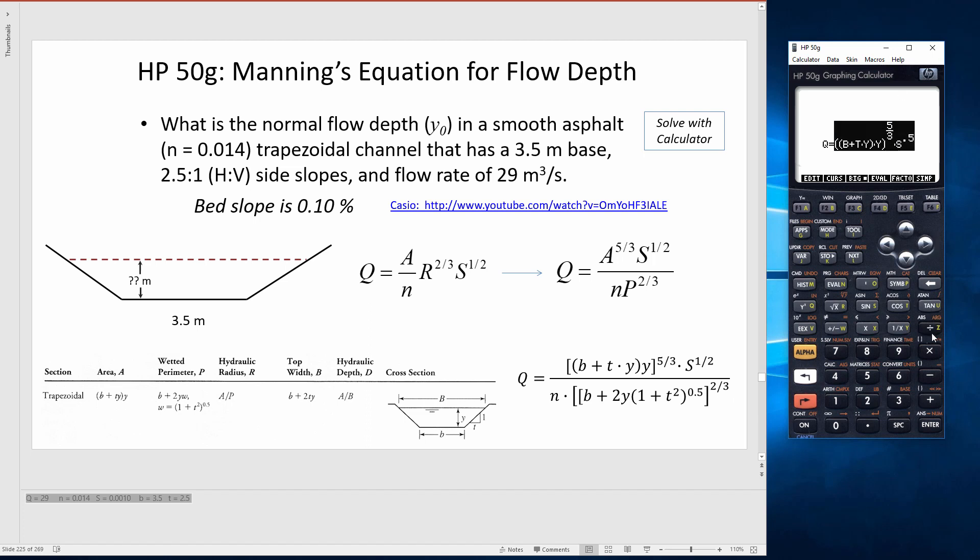And now I need to construct the denominator of that function. So I'm dividing by N times, now I'm going to have to put in manual parentheses here. The white gives me access to these parentheses. B plus 2 times Y times, I'll use another set of parentheses there to start getting this 1 plus T squared.